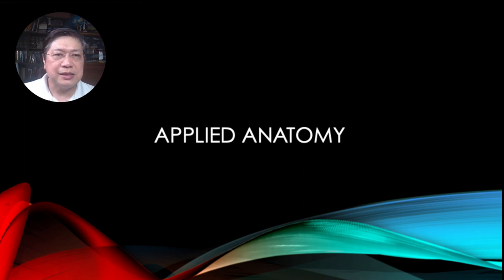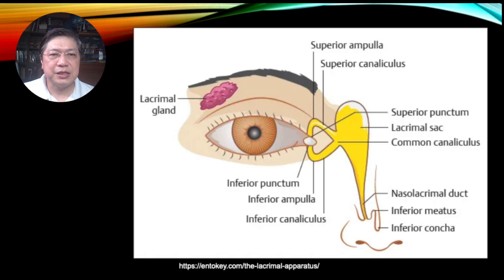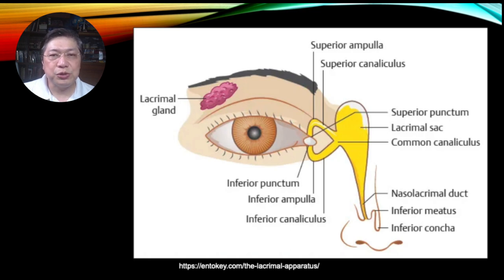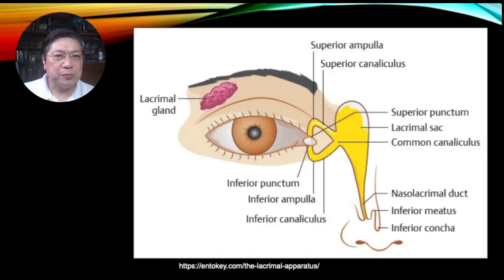Let's talk about anatomy and how it applies to our problems when it comes to tearing. This is how the basic lacrimal system looks — all the way from the lacrimal gland, you will see from the punctum to the ampulla to the canaliculus, going into the common canaliculus, into the lacrimal sac, down to the nasolacrimal duct, and into the inferior meatus, which drains through your nose. This is why when you cry, your nose also cries. The exit is at the inferior meatus, which is covered by the inferior concha.